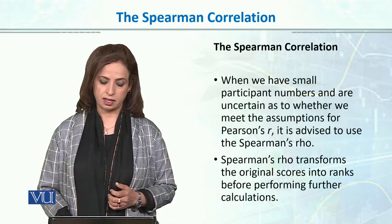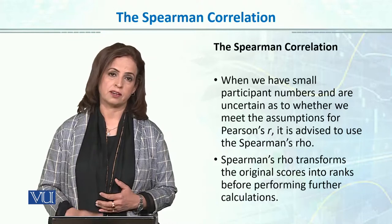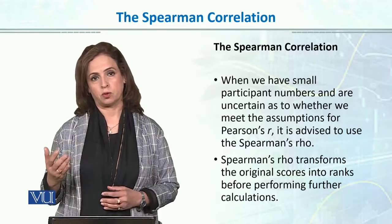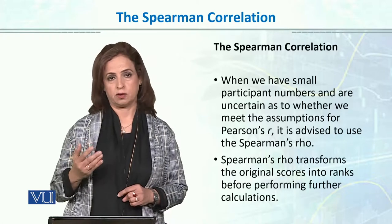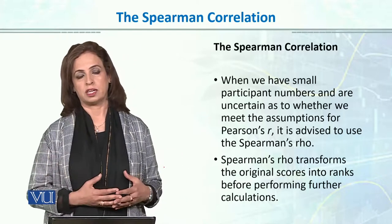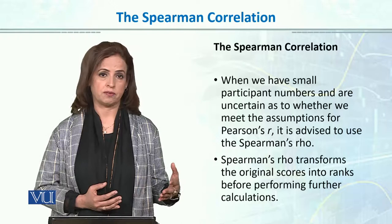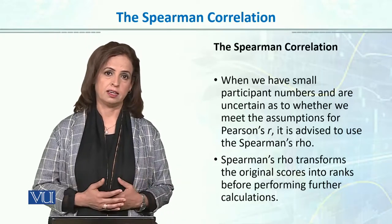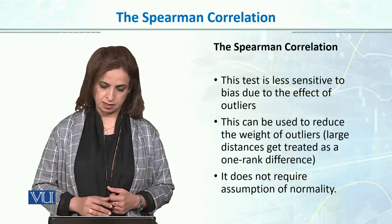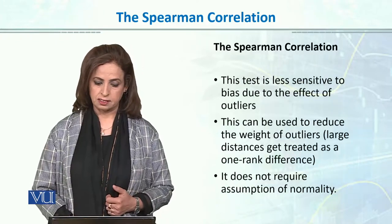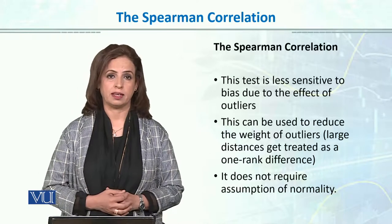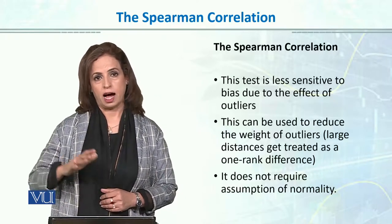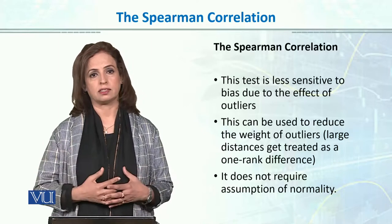In Spearman, we can transform original scores into ranks. If the sample size is small but data is quantitative — interval or ratio — you can convert that data into ranks and then apply Spearman. The test is less sensitive to bias and outliers.